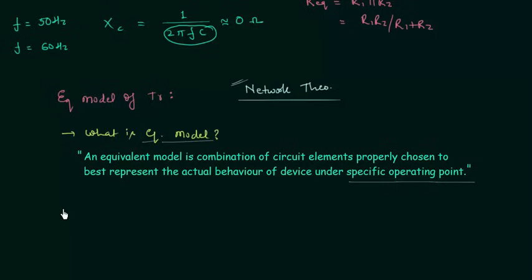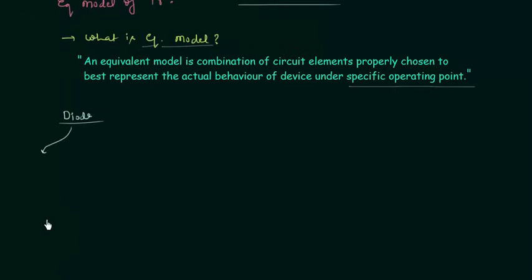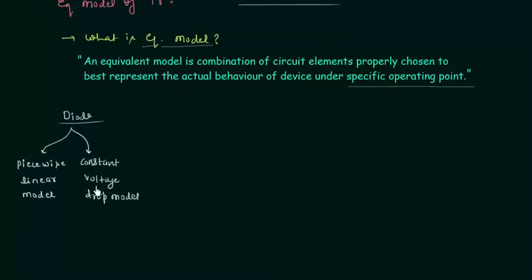Like in the case of a PN junction diode, I explained three equivalent models. The first model was the piecewise linear model, the second model was the constant voltage drop model, and the last model was the ideal model.